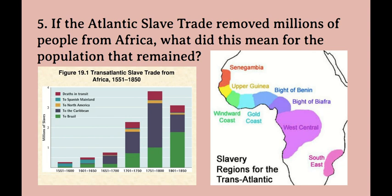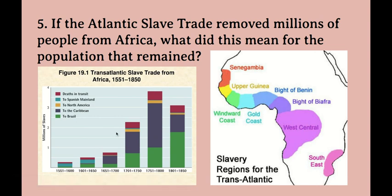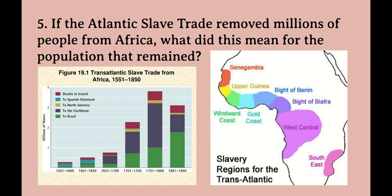This brings us to our last question: if the Atlantic slave trade removed millions of people from Africa, what did this mean for the population that remained? This graph shows the numbers of millions of people who were transported to the New World — as you can see, it increases over time — and these are the locations from which these people came. If literally millions, upwards of 10 million people, were removed from all these countries to be brought to the New World, this means that the population of largely men from the ages of 13 to 40 were gone from these societies for multiple generations.